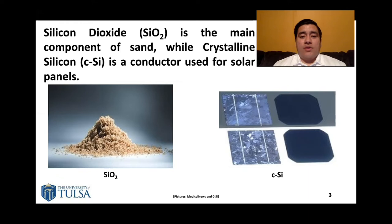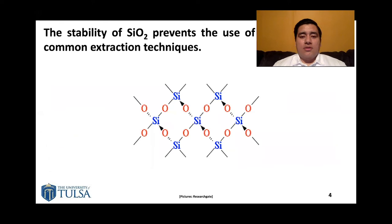The main uses of crystalline silicon are to build solar panels and new technologies such as computers and cell phones. For this reason, Silicon Valley is given the name silicon because of crystalline silicon.